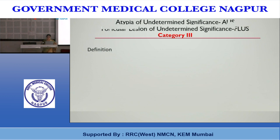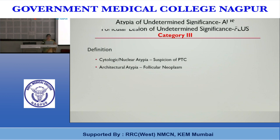By definition, this category is reserved for cases with cytologic or architectural atypia which is not sufficient to be classified as suspicious for a follicular neoplasm or malignancy, yet the atypia is more marked than can be attributed confidently to benign changes. The Bethesda system gives two names for this category, but we are supposed to use either OSTLUS or FLUS.